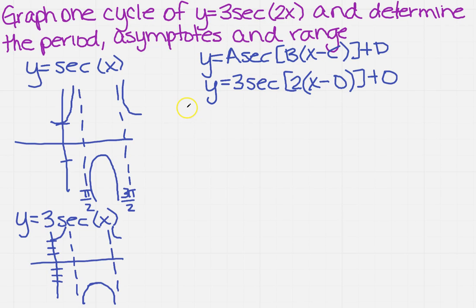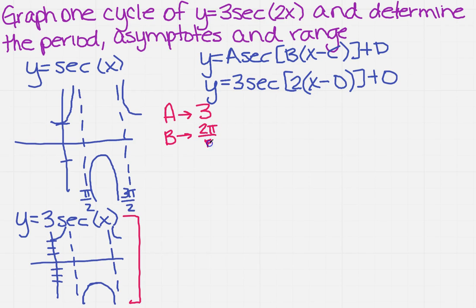Now, how does that help us? We know a is the amplitude, which is 3 — we already graphed that. For the period, we know b equals 2, and the period is 2 pi over b, so the period is 2 pi over 2, which equals pi. Since c equals 0 and d equals 0, those haven't changed anything with our graph.